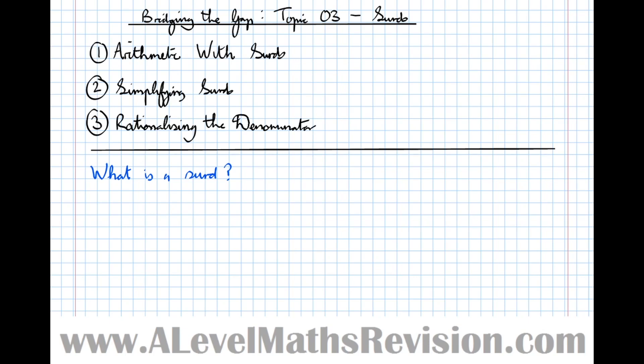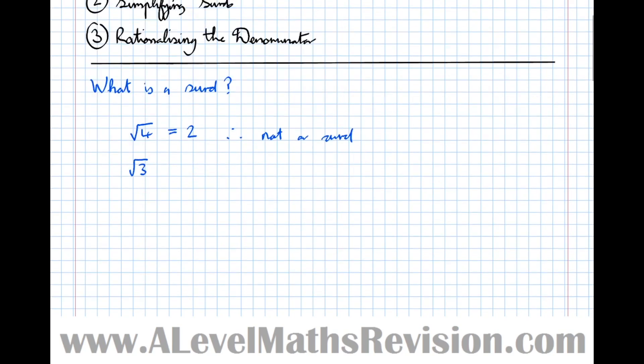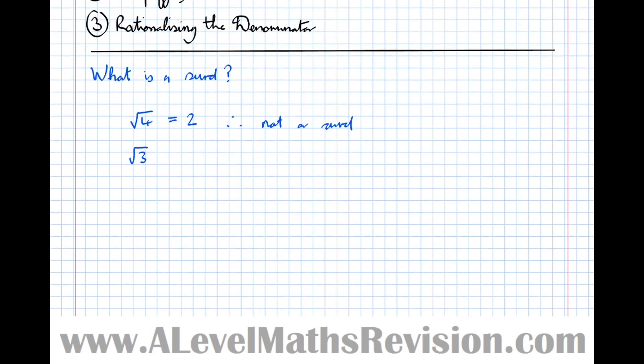Now a surd is a number that can't be written without some sort of a root sign. So for example, I'll give an example of something that isn't a surd. If I say root 4, well that can be written as 2. We don't need a root sign to write root of 4, because it can be written as 2. Therefore, it's not a surd.